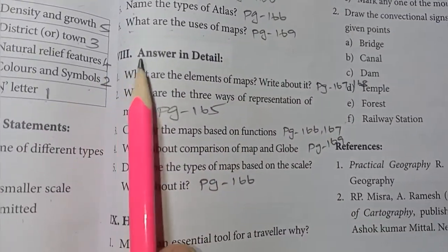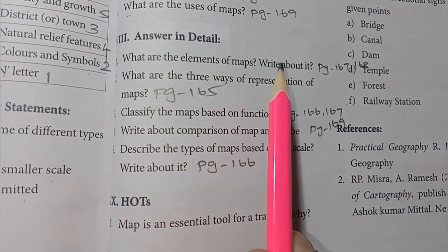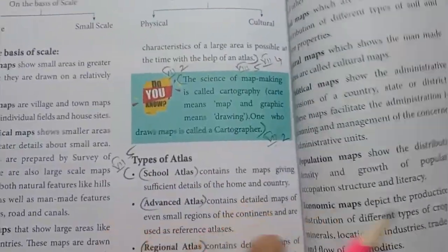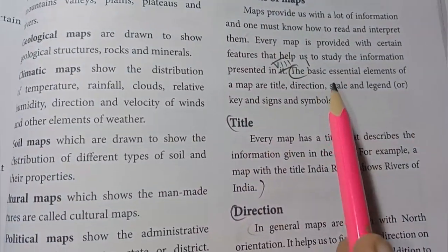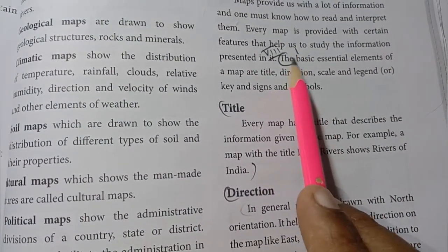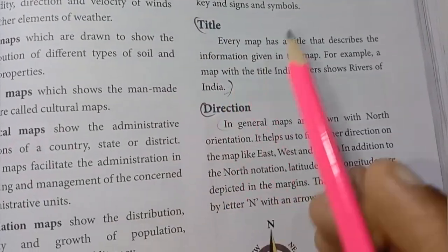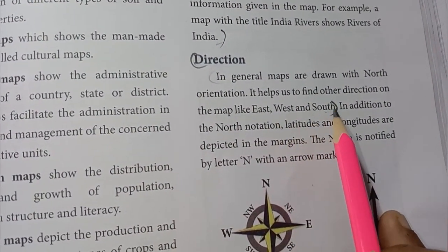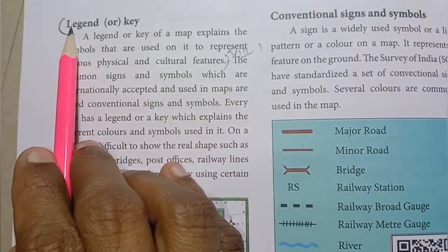Roman numeral 8: answer in detail. 1st one: what are the elements of a map? — page number 167 and 168. Elements of map: the basic essential elements — title, direction (east, west, south), scale (e.g., 10 km), and legend or key.